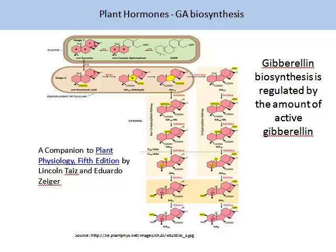On the screen is a visual representation of the GA biosynthesis pathway, which can be found in the recommended textbook. The biosynthesis of GA generally occurs in three stages, taking place in different locations of the plant cell: the plastid, endoplasmic reticulum, and cytosol. It is not required for you to learn all the steps of this pathway, but only that there are three stages and a number of intermediate compounds. Some of these, such as GA12 and GA53, are intermediates which then go on to be oxidised into another form of GA.